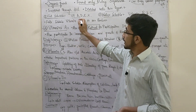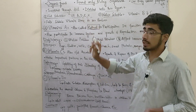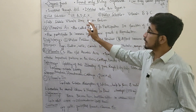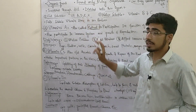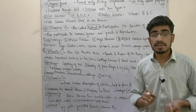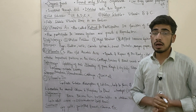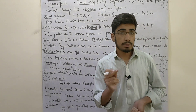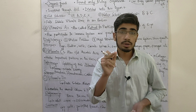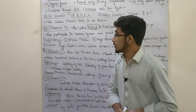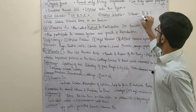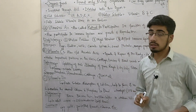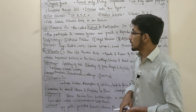Vitamins A, D, E, and K are water-insoluble, that is, fat-soluble. Vitamin B and vitamin C are water-soluble vitamins.